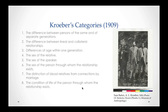There's also the distinction between blood relatives and connections through marriage, which we definitely have in our culture — brother versus brother-in-law, mother versus mother-in-law. And then the condition of life of the person through whom the relationship exists. These are the different influences on kinship terminology that Kroeber outlines when he starts discussing and theorizing about kinship terms.